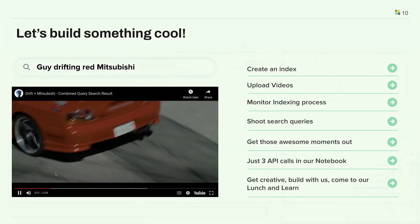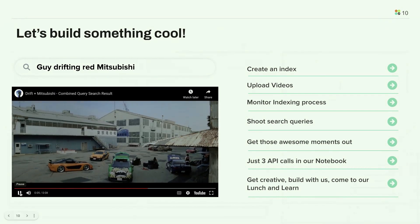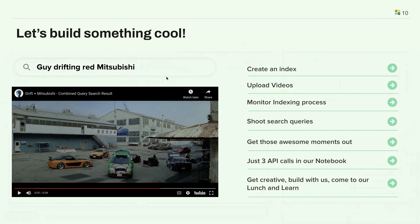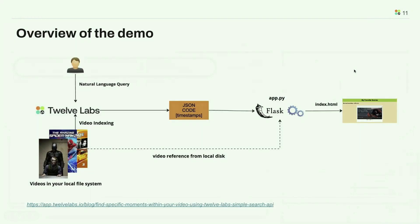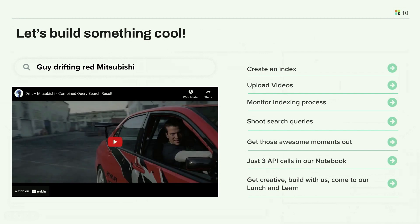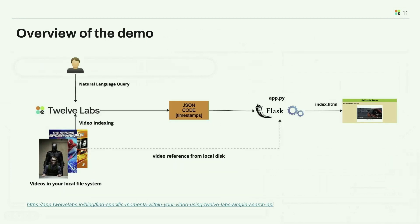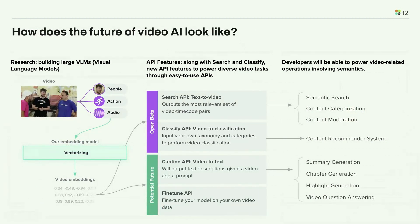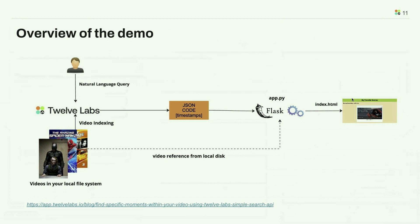Now the demo part. The search query for this video is 'Guy Drifting Red Mitsubishi' — from the famous Tokyo Drift, the Fast and the Furious series. What I'm going to do is index the entire full-length movie onto the platform, shoot a natural language query like this, and the system will return the relevant video segments. Then, for the demo, I'll spin up a simple Flask-based app, configured so we get a simple web page where the results are embedded in the form of a video.